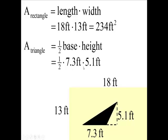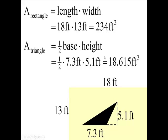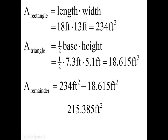And when we multiply those and divide it by 2, you could get 18.615 square feet. Now we're cutting this from this, so the remainder is going to be the 234 feet minus the area of the triangle. When we subtract those, we get 215.385 square feet.